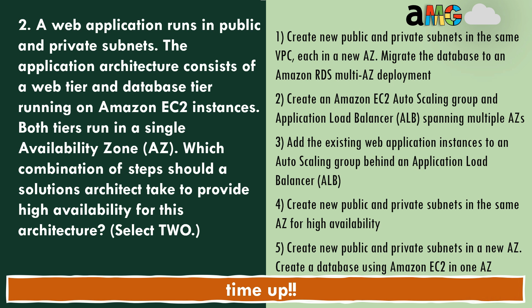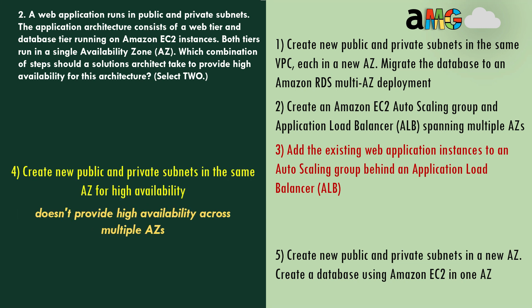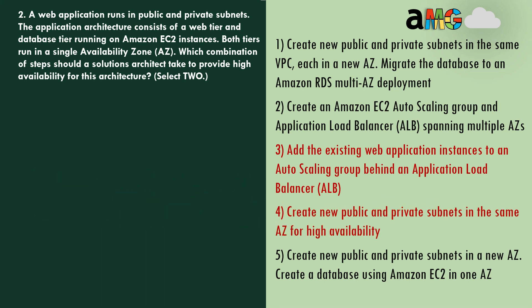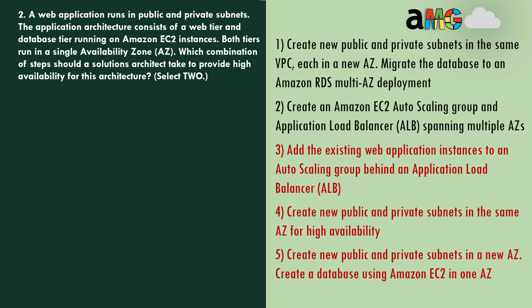Time's up. Let's analyze. Option 3 — adding existing web application instances to an Auto Scaling group behind an Application Load Balancer is not correct because it doesn't necessarily span multiple availability zones, so wrong answer. Option 4 — creating new public and private subnets in the same AZ doesn't provide high availability across multiple AZs, so also wrong. Option 5 — creating a database using Amazon EC2 in one AZ doesn't provide the same level of high availability as an RDS Multi-AZ deployment, so wrong answer.